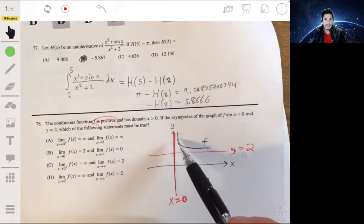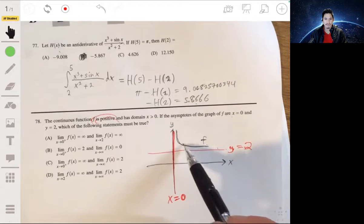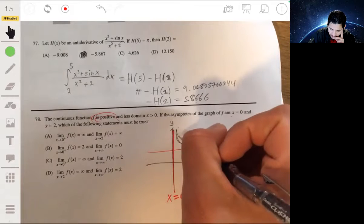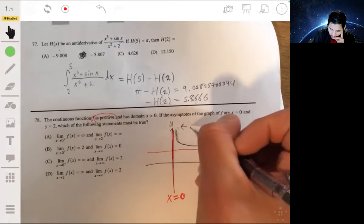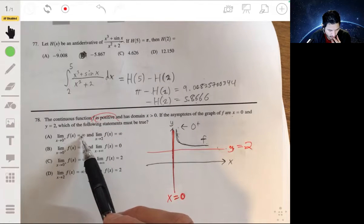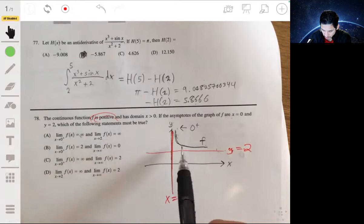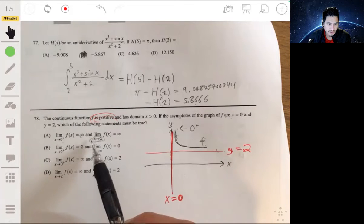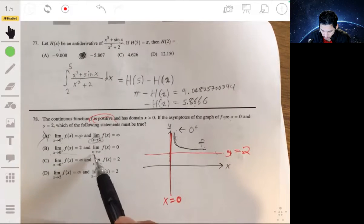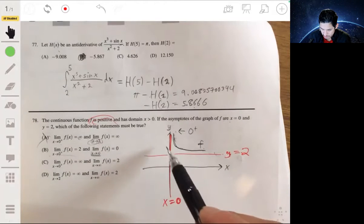And so then as x goes to infinity, f of x goes to 2. As x goes to 0, f of x goes to infinity. So let's see which of these match up. They're approaching 0 from the positive side, so that's okay. As x goes to 0, we go to infinity, yeah. And then x goes to 2, okay that's not, we don't want x going to 2, we want x going to infinity because the asymptote is y equals 2.